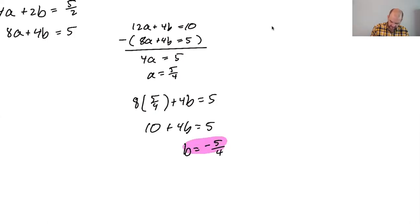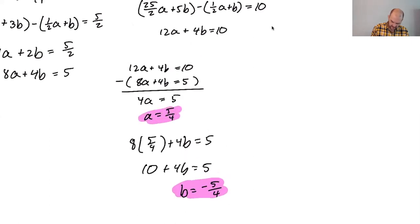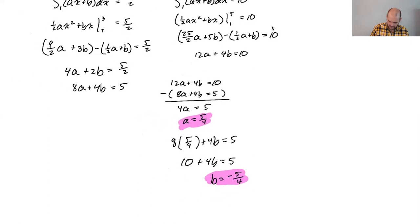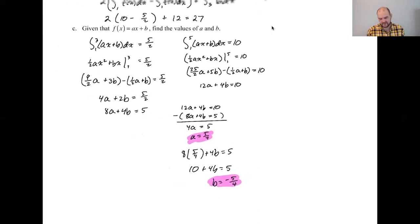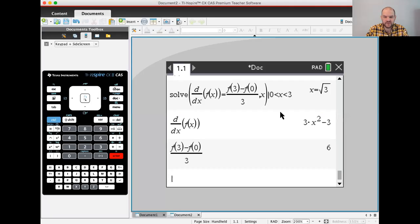So what do I have? I have the a. So 8 times 5 fourths plus 4 b is 5. 10 plus 4 b is 5. So b is negative 5 fourths. I think that if this is true... Well, that's weird. I don't know how confident am I feeling. Not super confident, but you know what? Let's see what the calculator says. Well, I mean, I'm feeling pretty confident. I don't think I made any killer mistakes here. But you never know.